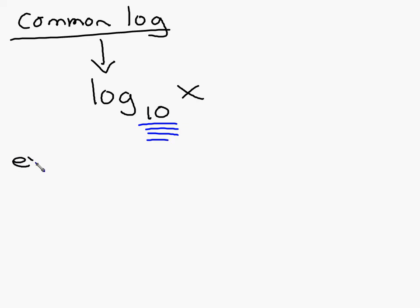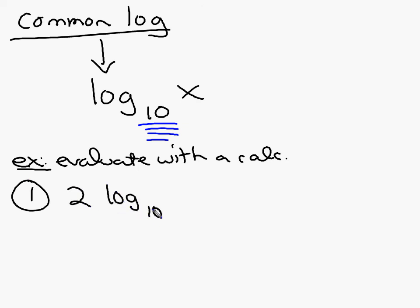So tonight, if they ask you to evaluate with a calculator, let's say they give you something like this. Let's find 2 log base 10 of 2.5. Well, since it says log base 10, that means I can use the log button on your calculator. So when you enter this in your calculator, you're just going to press the log key. I don't have my graphing calculator program up right now, but it's very simple. You press the log key. You press 2.5. Hit enter. 0.795.